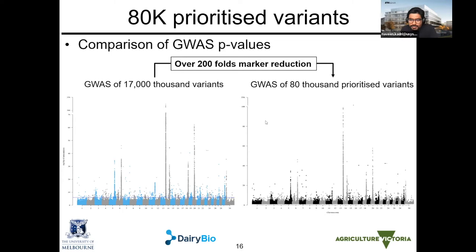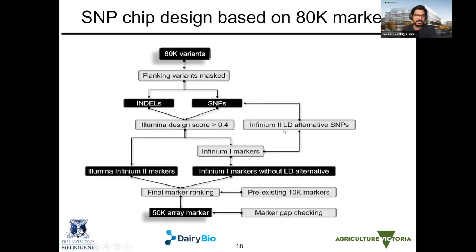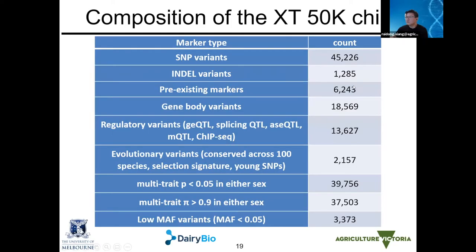There's another question from Adela asking about the overlap between the customized and the standard 50k chip. The overlap is a few thousand SNPs. That's also why, when we work with industry, we have to include more variants they prefer to use, because they rely on many markers that exist on other standard panels.